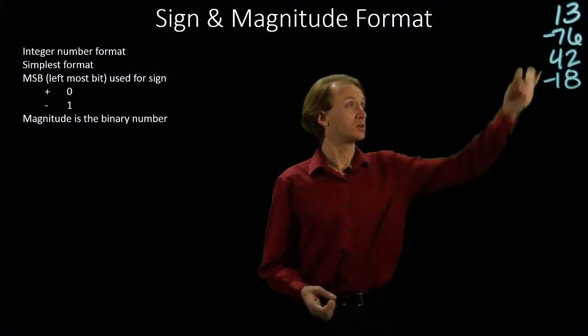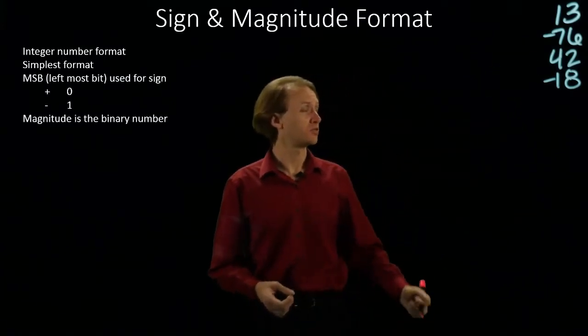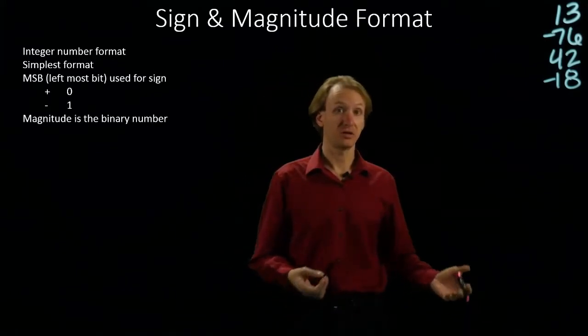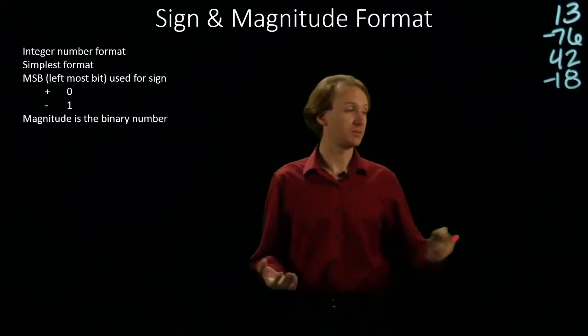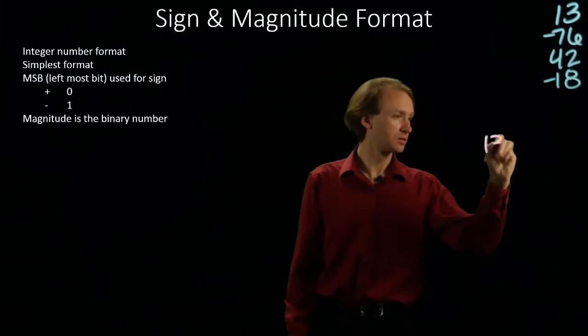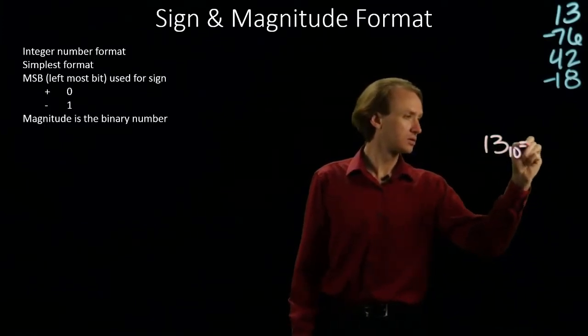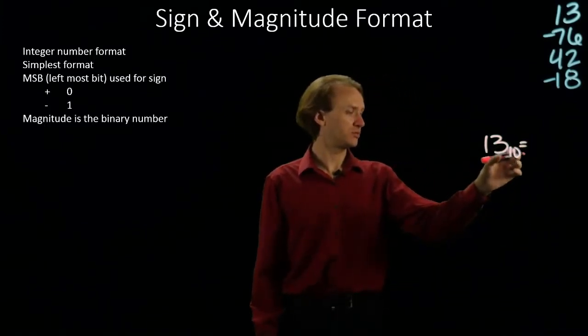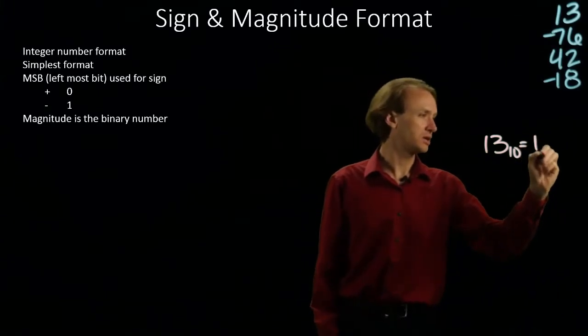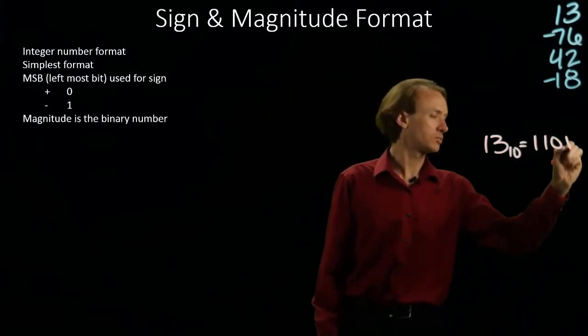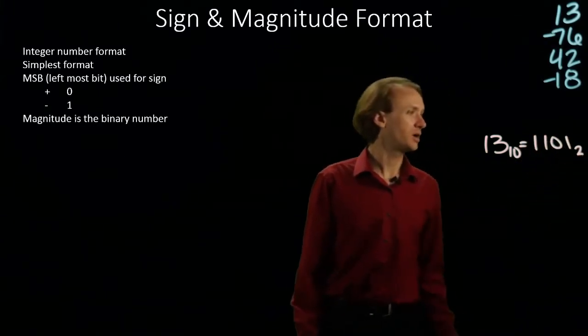So our first number is 13. The first thing I want to do is convert 13 from decimal into binary. So 13 in base 10 is 8 plus 4 plus 1 in binary.